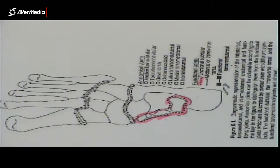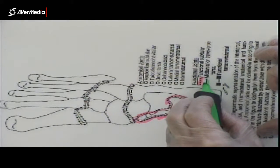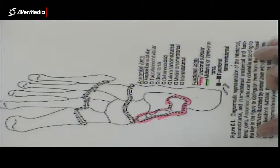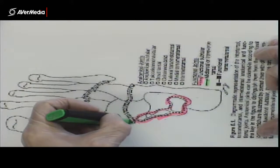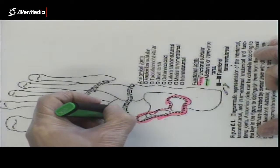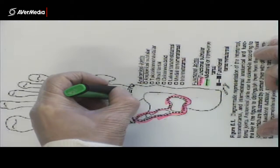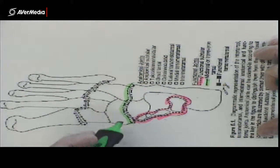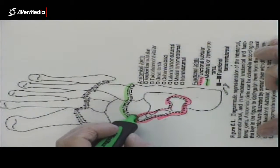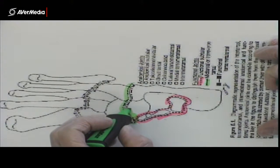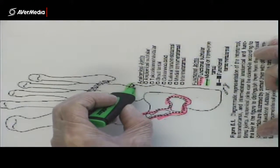Then we have the mid-tarsal joint. So we colour it in there on the key. It's this dotted line here running across the foot from medial to lateral. And I'm trying, maybe not being completely successful, but I'm trying to keep inside the dotted line clear. We're going to colour that in in a minute.